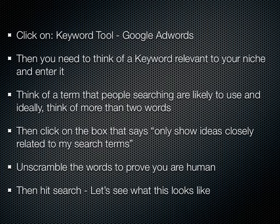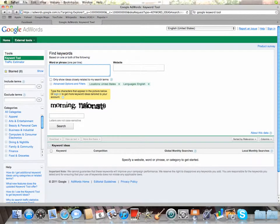Then you need to come up with a keyword that's relevant to your niche and enter it. For example, my niche is people like me — mums working from home — so that's going to be the kind of keyword I'll come up with. You've got to think of a term that people searching the internet are likely to use, and ideally you want more than two words — this is what's known as a long tail keyword. Then you need to click on the box that says 'only show ideas closely related to my search terms,' unscramble the words that prove you're human, and hit search.